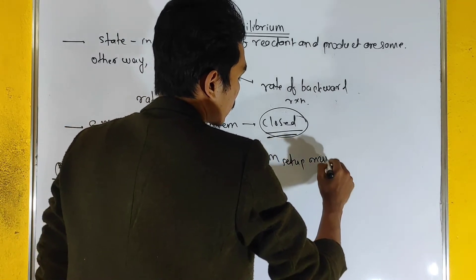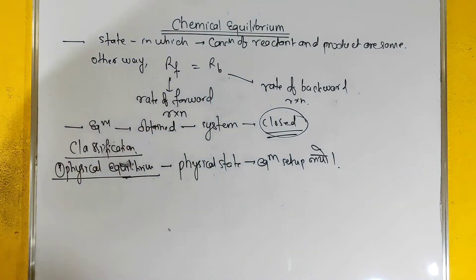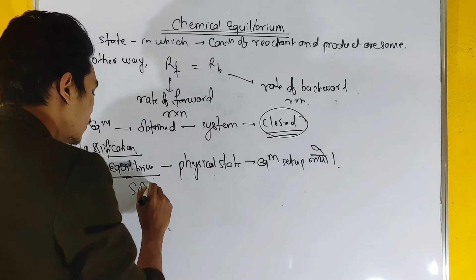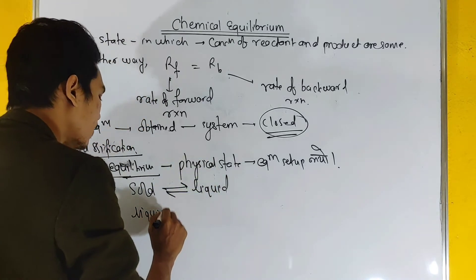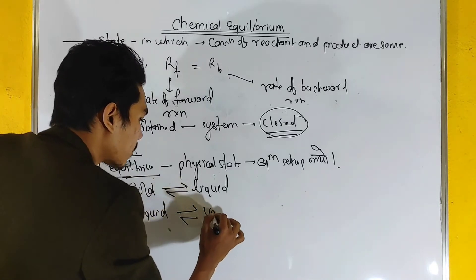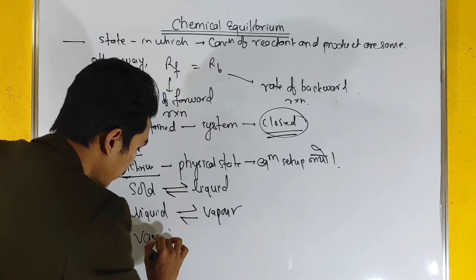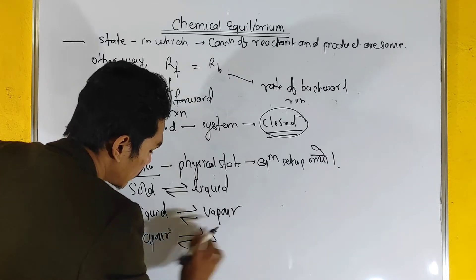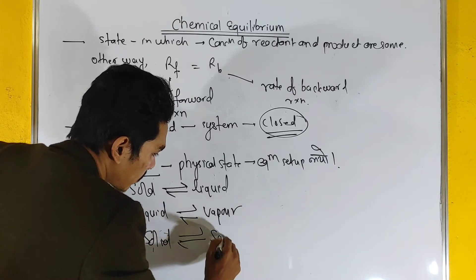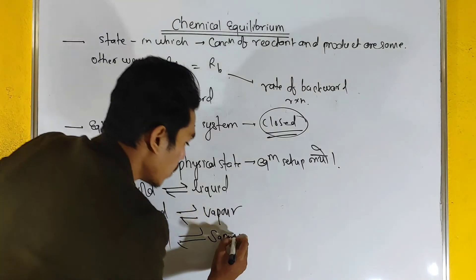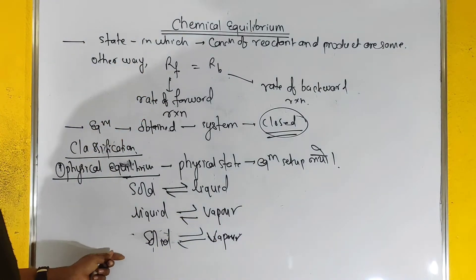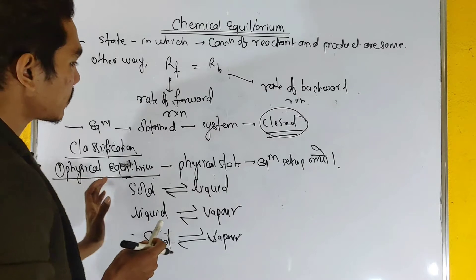For example, under certain conditions, equilibrium can be set up between solid and liquid states. Solid can convert to liquid and liquid can convert back to solid. Similarly, solid can convert to vapor and vapor can convert back to solid. This is physical state equilibrium.